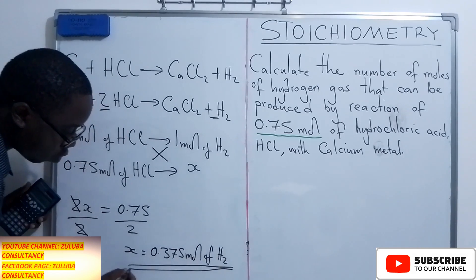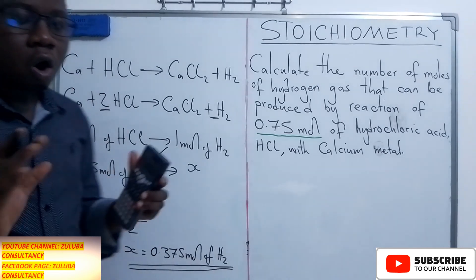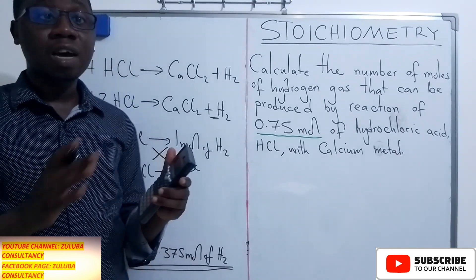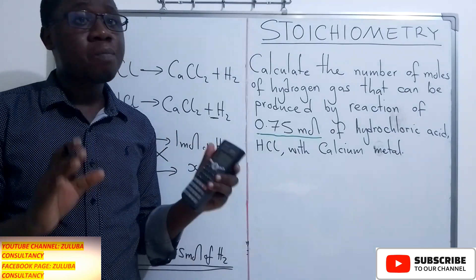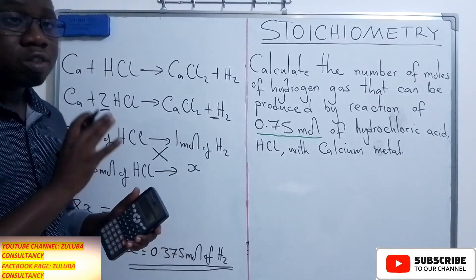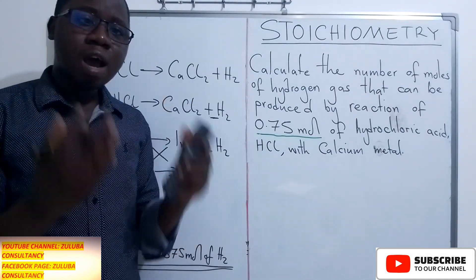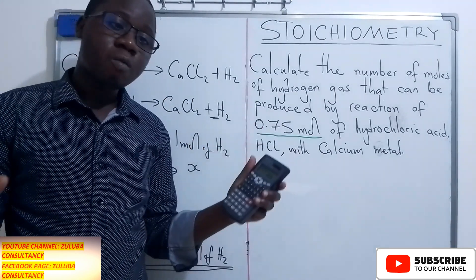So this is the number of moles of hydrogen that will be produced. Hope you have followed the steps that you need to do in this question. The first one is to come up with the balanced chemical equation. Thereafter, you use the molar ratios to find the number of moles of the gas produced.